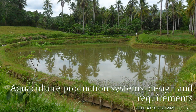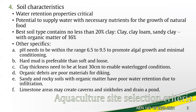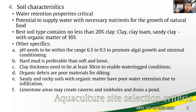Next, we proceed with the soil that is holding this water. This is an important criterion for freshwater and brackish water ponds. For soil, its water retention properties are critical. It should be able to hold water in the structure. Thus, it should have the potential to supply water with necessary nutrients for the growth of the natural food of the culture species.